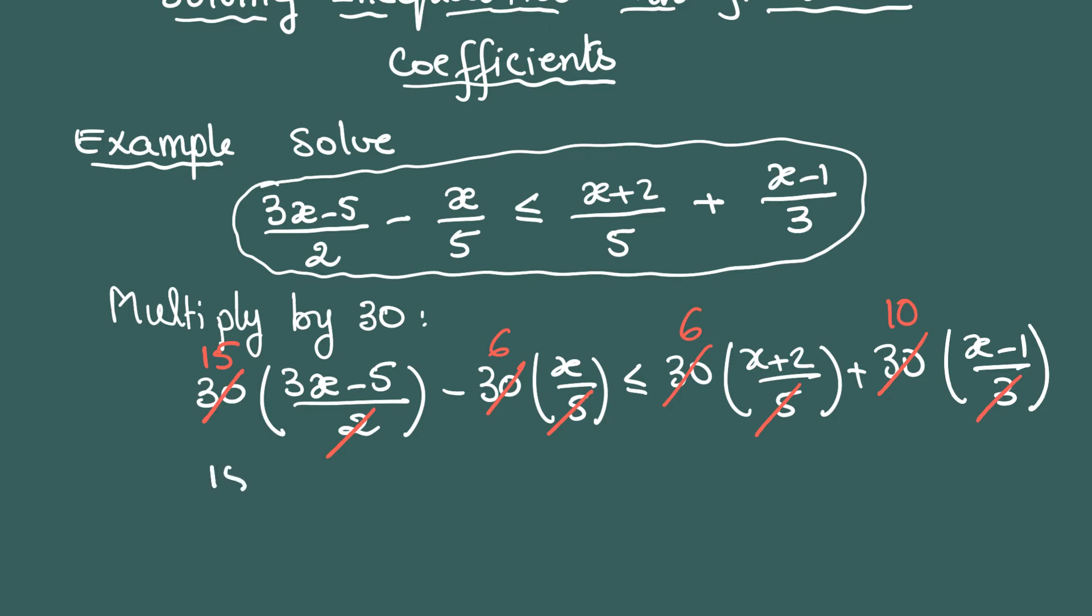This means the next line would look like 15(3x-5) - 6(x) ≤ 6(x+2) + 10(x-1).